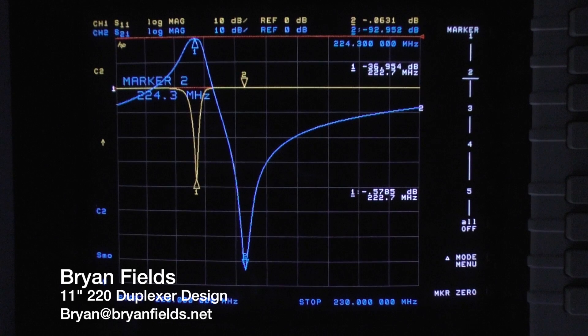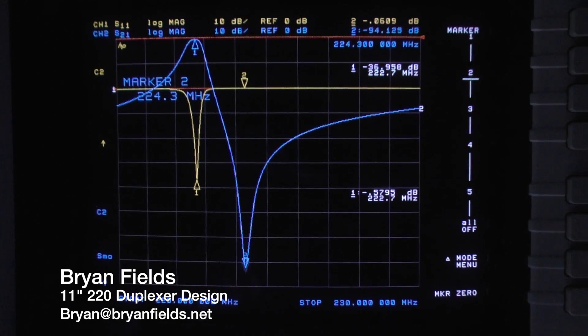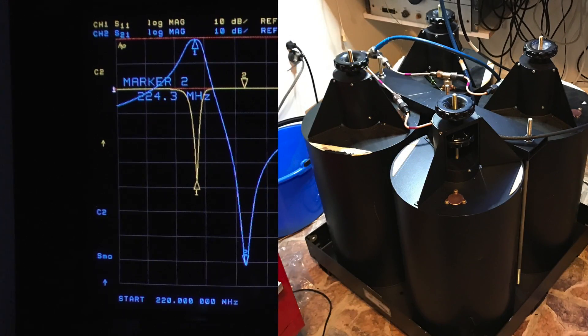Greetings, this is Brian Fields Amateur Radio Callsign W9CR and today I'm working on an 11-inch 4-can 220 megahertz duplexer that just has some amazing performance.